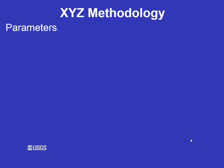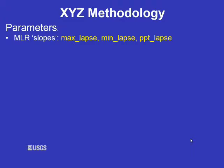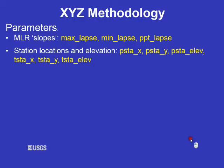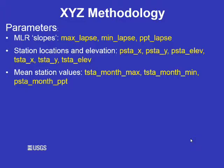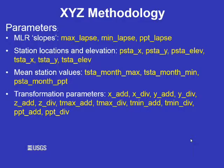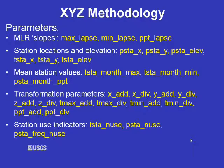There are many parameters you need to calculate for the XYZ_dist module: multiple linear regression slope values for maximum temperature, minimum temperature, and precipitation; station locations and elevations (XYZs); and for each station the mean, maximum, and minimum temperature and precipitation in case all chosen stations are missing on a given day. You will also need transformation parameters, because the multiple linear regression equation needs to be developed with transformed CVs since the CVs have drastically different magnitudes. These are further explained in the PRMS manual.